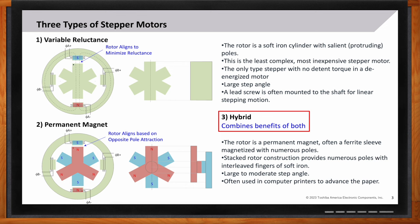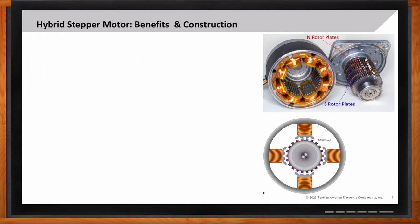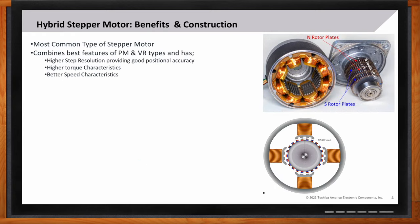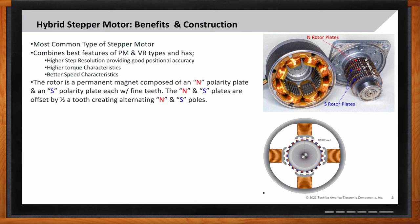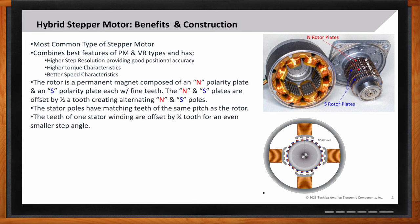Okay, so let's talk about that hybrid stepper motor in a bit more detail. Sure. This is actually the most common type of stepper motor. It combines the best features of the permanent magnet and the variable reluctance motor. And the key characteristic it has is that it has a higher step resolution. It's good for positional accuracy. It has a higher torque and better speed characteristics than either of the permanent magnet or the variable reduction types. In this case, the rotor is a permanent magnet composed of a north polarity plate and a south polarity plate. And these have fine teeth, as you can see in the image to the right. And these teeth are interleaved or offset by half a tooth spacing. So this basically creates your north-south alternating poles on your rotor. In addition, the stator has matching teeth on the poles. And these stators are also offset by one quarter tooth.